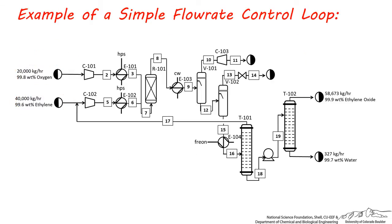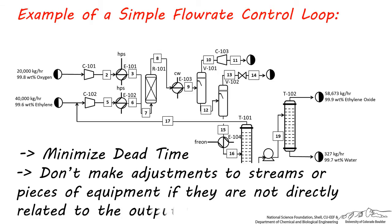As a general rule, minimize the dead time and lag time for a feedback control loop. Also, don't make adjustments to streams or pieces of equipment if they're not directly related to the variable you're trying to control. With that in mind, think for a moment about how you would design an effective control loop to ensure more consistent flow rates throughout this process.